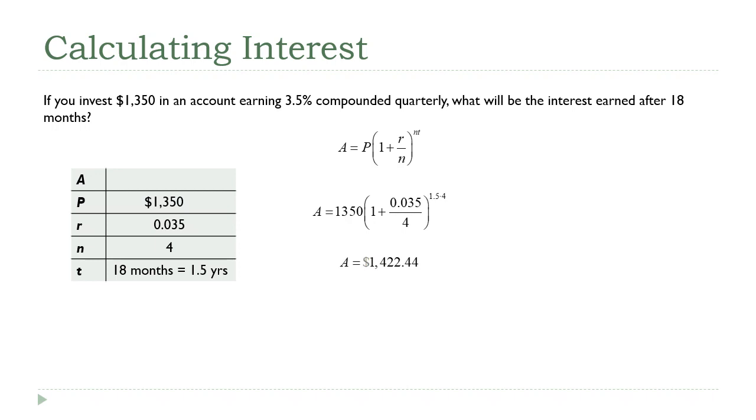That future value, that A value we just found, is made up of two parts. Money comes into this account in two ways and only two ways. There's the $1,350, the P, that I put in, and there's the interest that the bank put in. So if we add up the principal and the interest, it has to equal that A value, the future value.